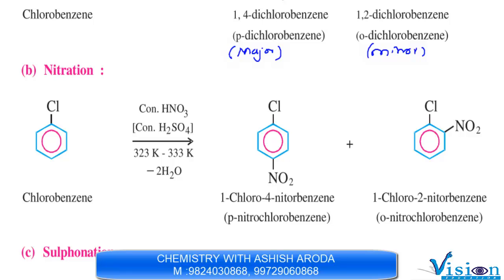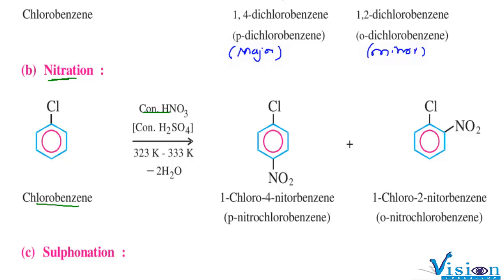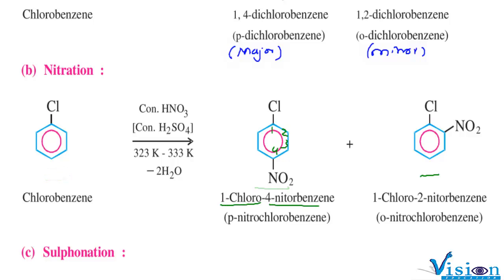The second reaction: chlorobenzene undergoes nitration using concentrated HNO₃ and concentrated H₂SO₄. The nitro group attaches at the ortho and para positions, giving para-nitrochlorobenzene (1-chloro-4-nitrobenzene) and ortho-nitrochlorobenzene (1-chloro-2-nitrobenzene).